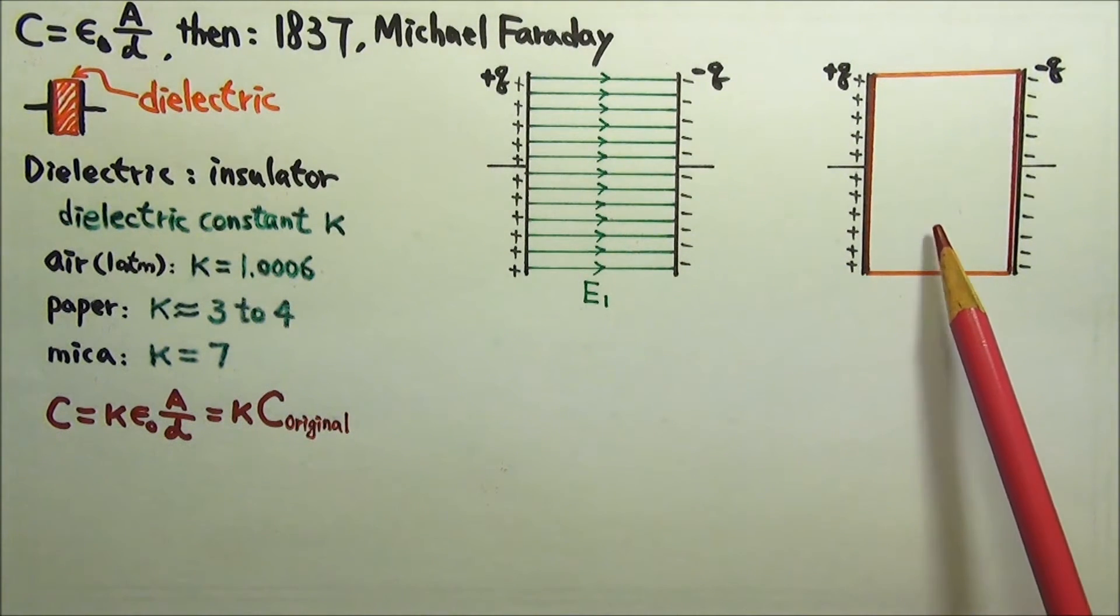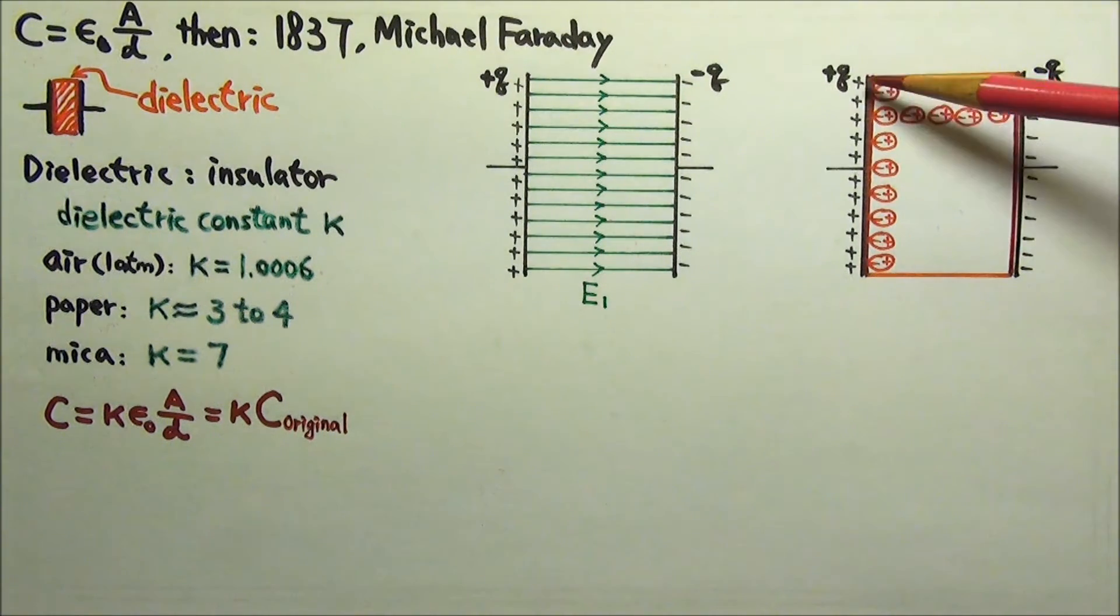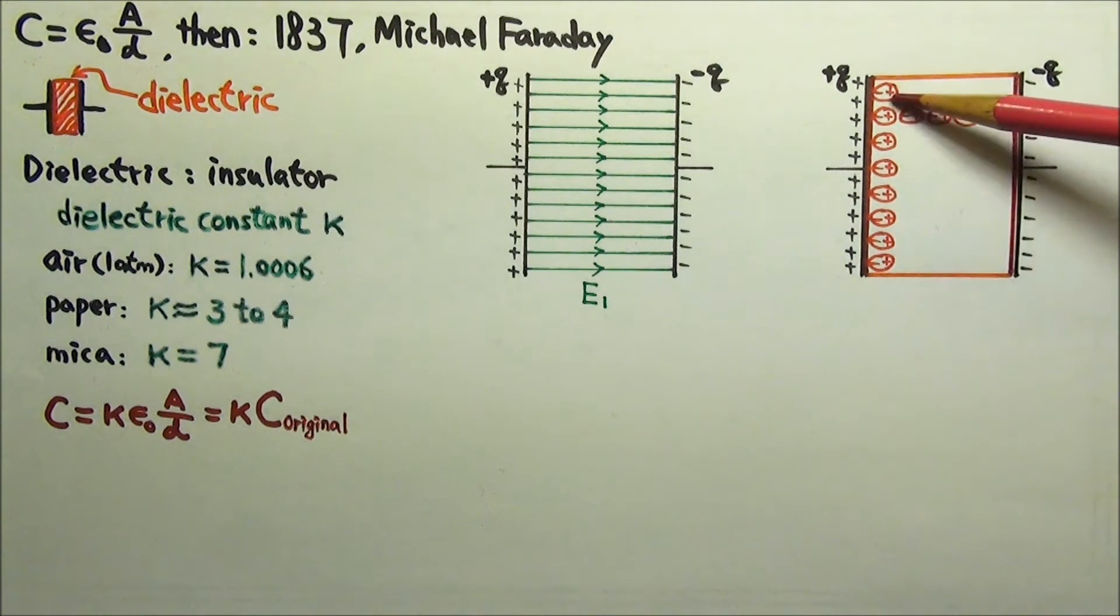The second set has a dielectric material filled between the plates. Because of the charges on the plates, the molecules in the dielectric get polarized like this.